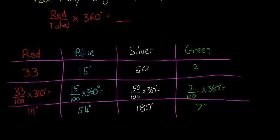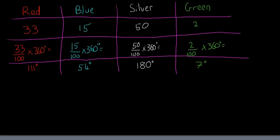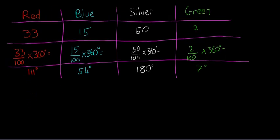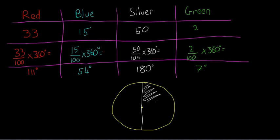So the last step then is to just draw out your circle and to split it up into the different amount of degrees you see here. So the circle, I'm obviously not going to draw a perfect circle. So put a little dot in the middle and then just do them one at a time. Start with the easiest one, which in this case is going to be the silver cars. So draw a straight line down, we know 180 degrees is exactly half.